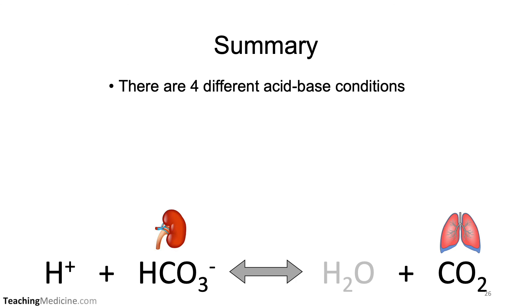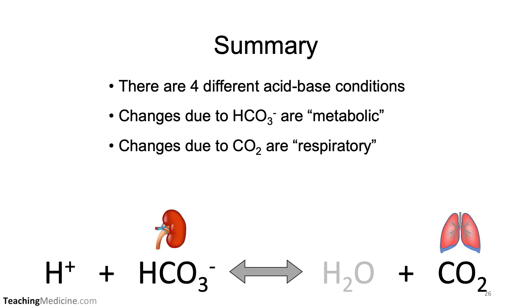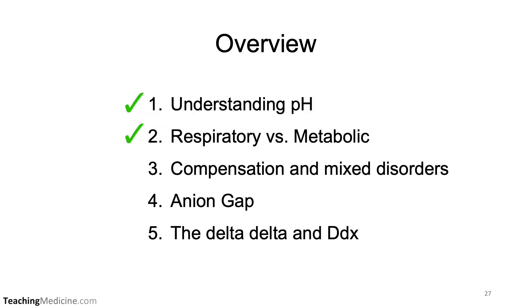In summary, there are four different acid-base conditions. Any changes to the pH due to changes in bicarb are called metabolic. Any changes to pH due to carbon dioxide levels are called respiratory. Knowing the direction that the equation will shift — either left or right — will predict whether the hydrogen ion concentration will go up or go down, and therefore will predict whether these changes create acidosis or alkalosis. This is the end of this presentation, and we have covered understanding pH and respiratory versus metabolic changes. In the next presentation, we will discuss compensation and mixed disorders.